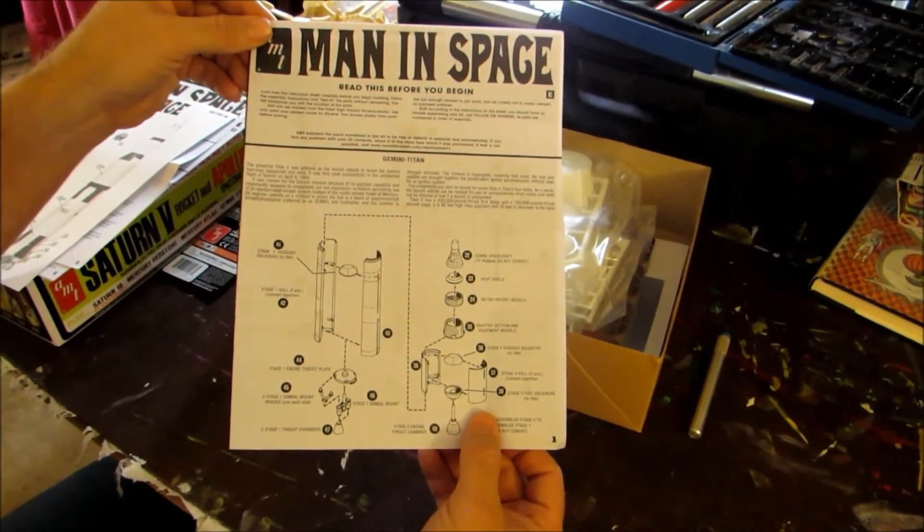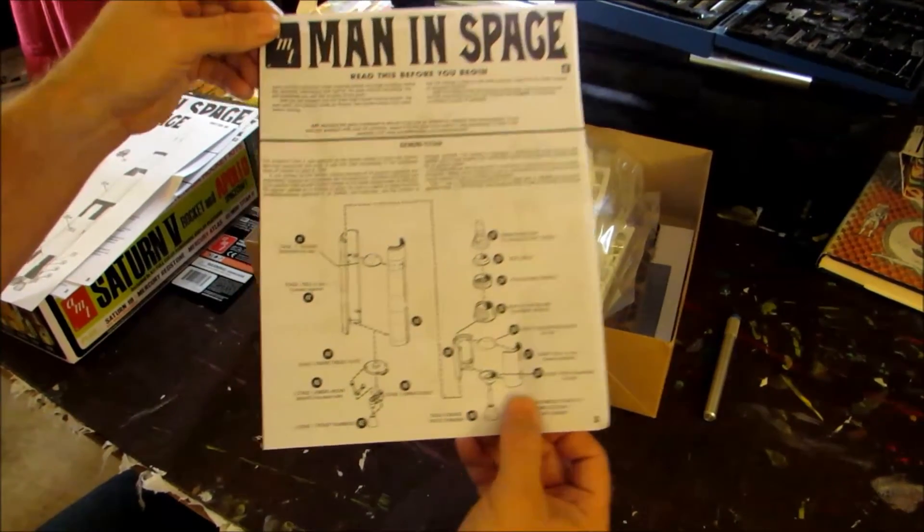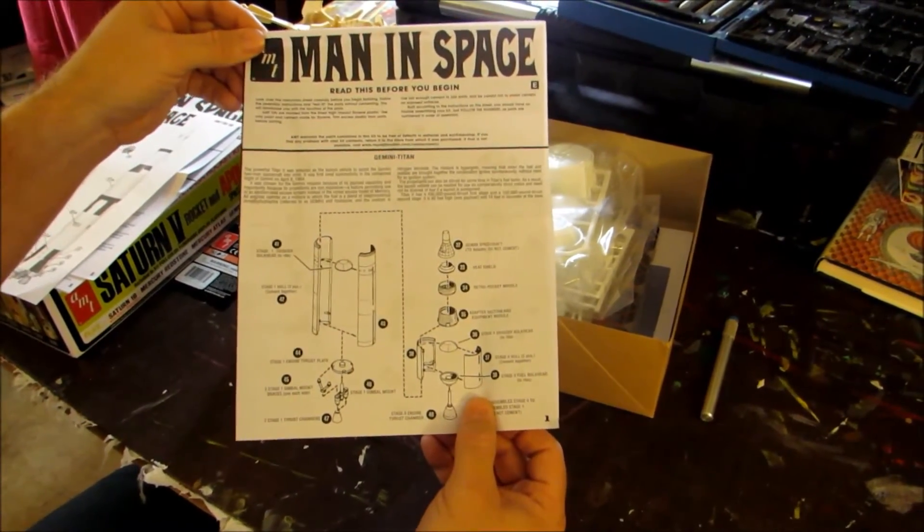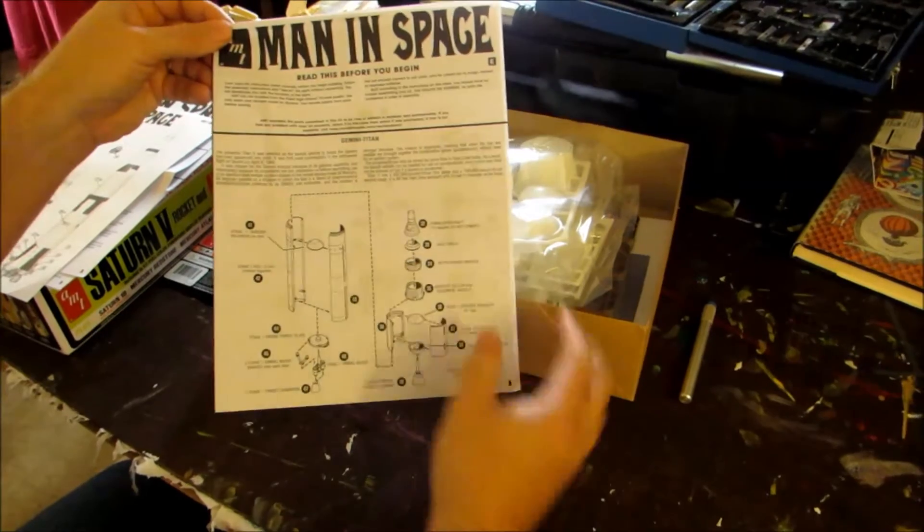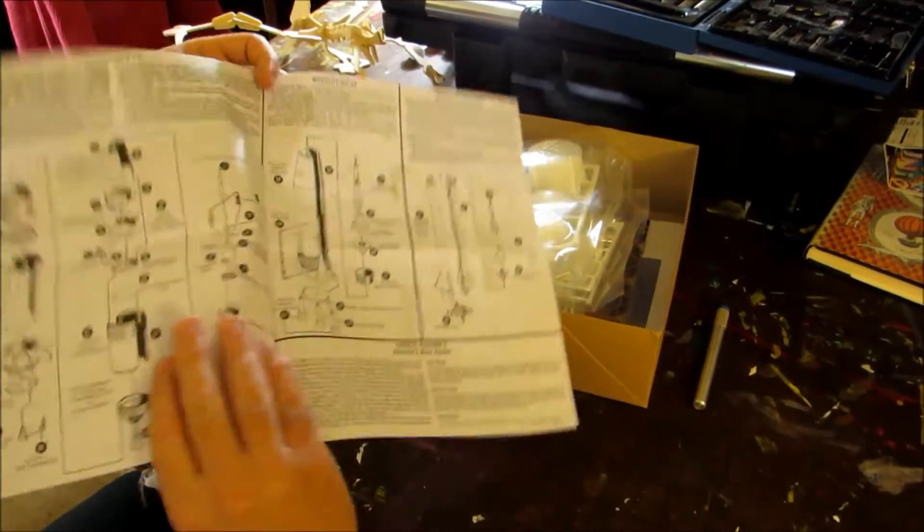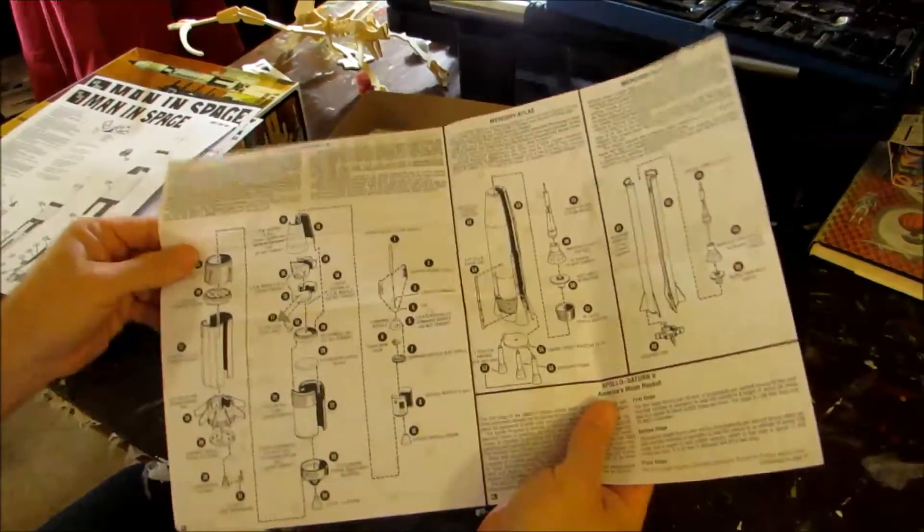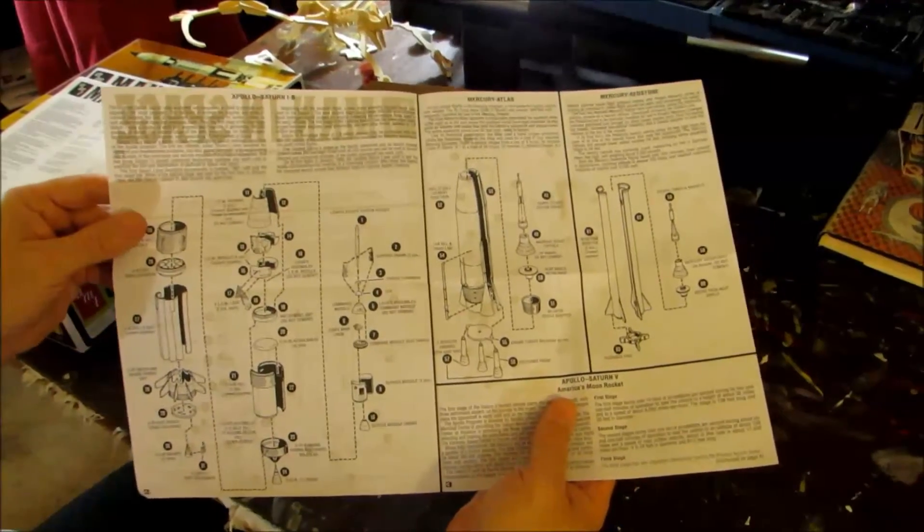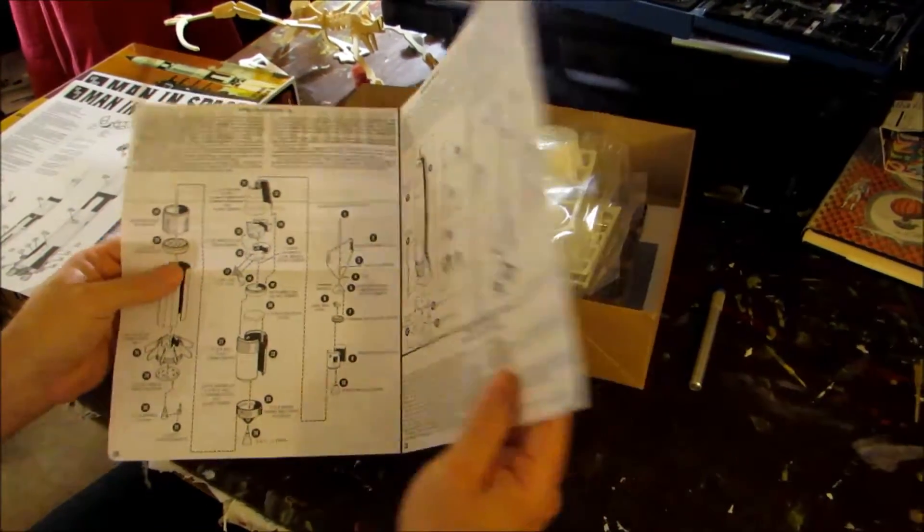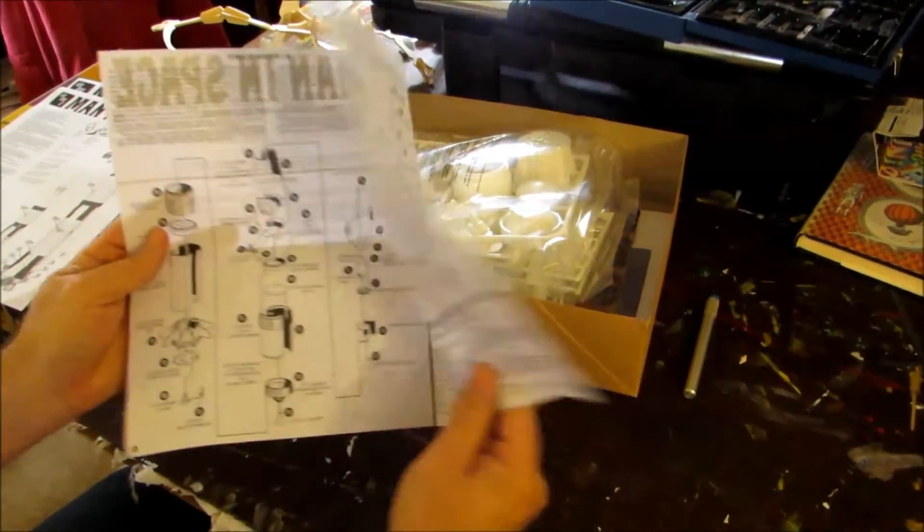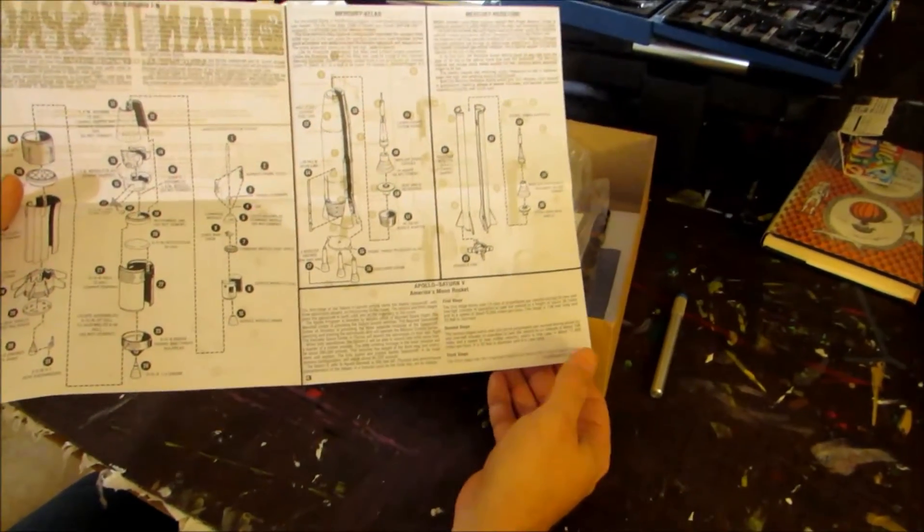The instructions are quite detailed given the kit that it is. It gives a brief write up of each spacecraft. Saturn IB, Mercury Atlas, Redstone, and then finally the monster of all rockets, the Apollo Saturn V.